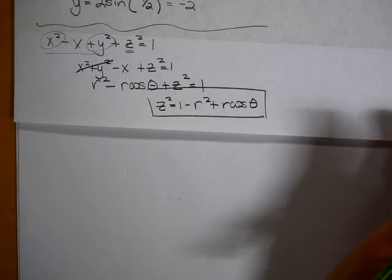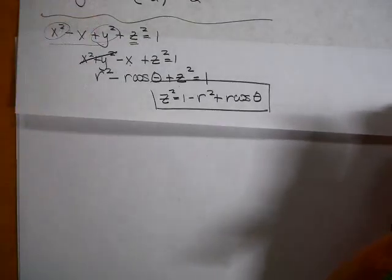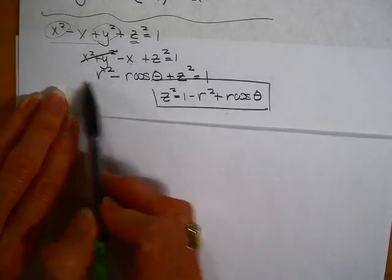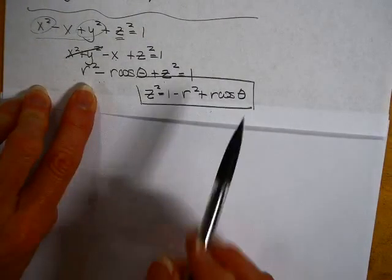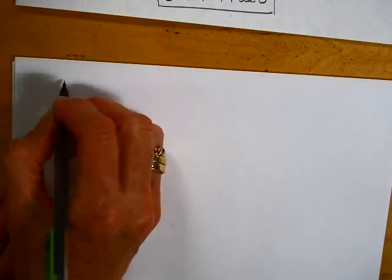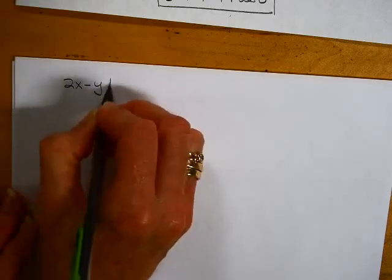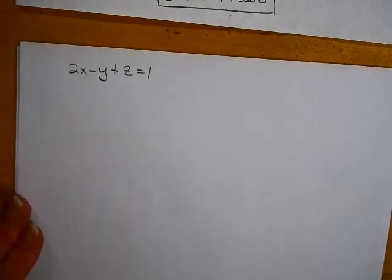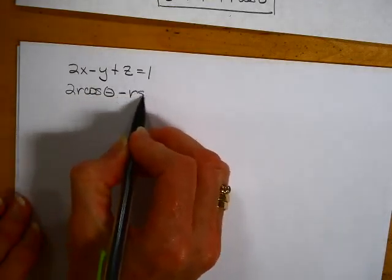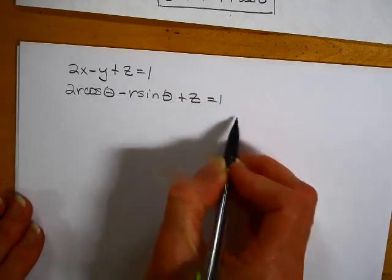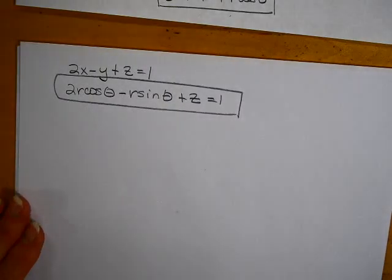I think Webassign solves them for z². So z² would be 1 - r² + r cosine θ. If you just have something like 2x - y + z = 1, do you have any problem getting that to cylindrical? The x is r cosine theta minus y, which is r sine theta, plus z = 1. And that's it.